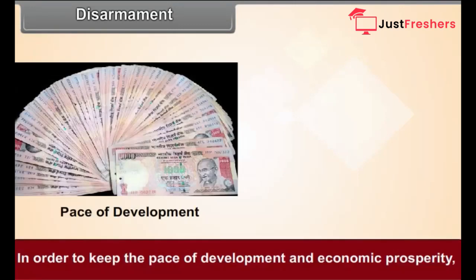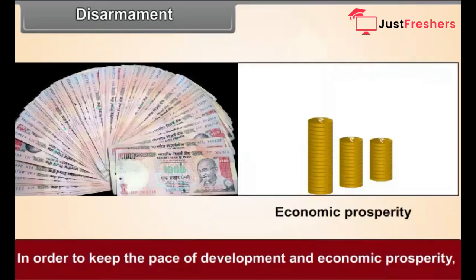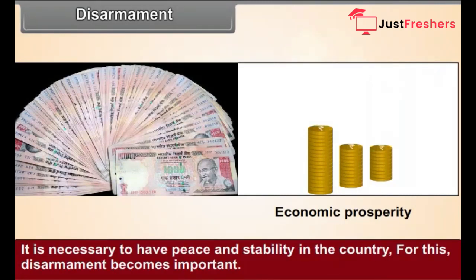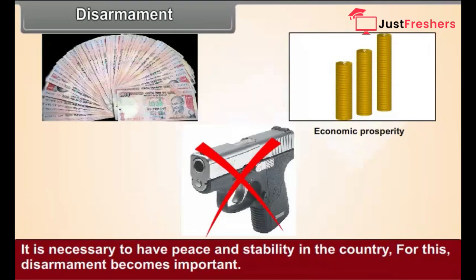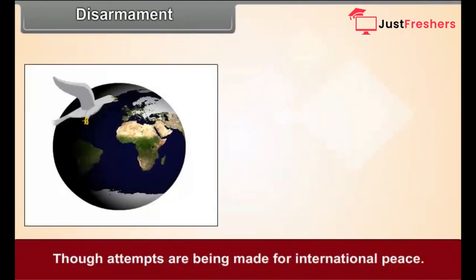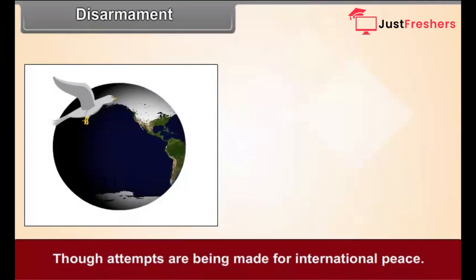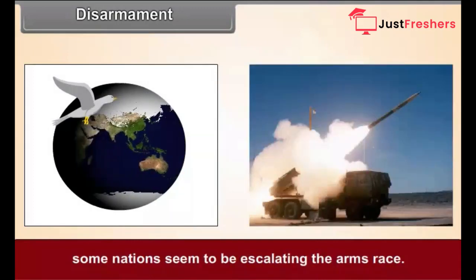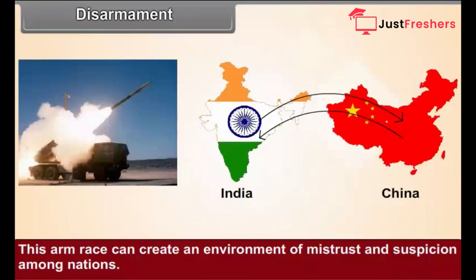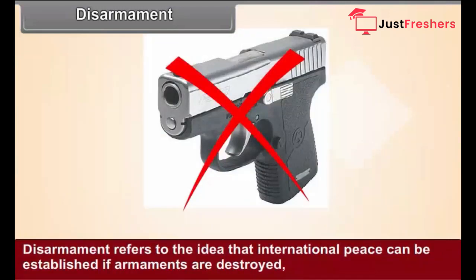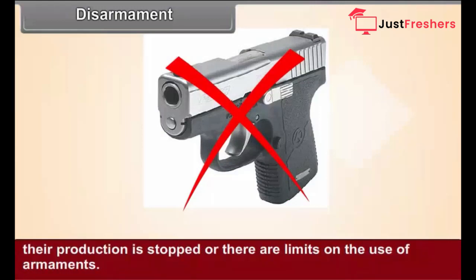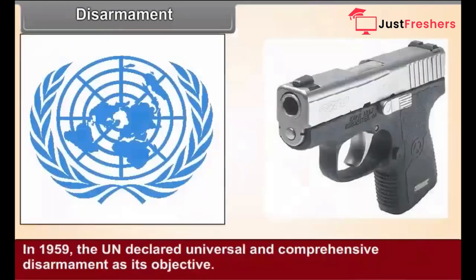Disarmament: In order to keep the pace of development and economic prosperity, it is necessary to have peace and stability in the country. For this, disarmament becomes important. Though attempts are being made for international peace, some nations seem to be escalating the arms race. This arms race can create an environment of mistrust and suspicion among nations. Disarmament refers to the idea that international peace can be established if armaments are destroyed, their production is stopped, or there are limits on the use of armaments. In 1959, the UN declared universal and comprehensive disarmament as its objective.